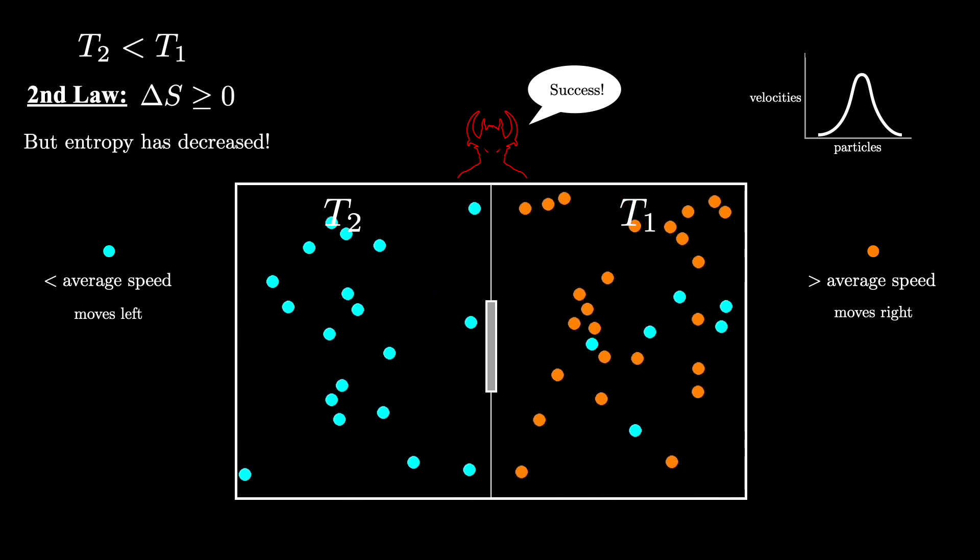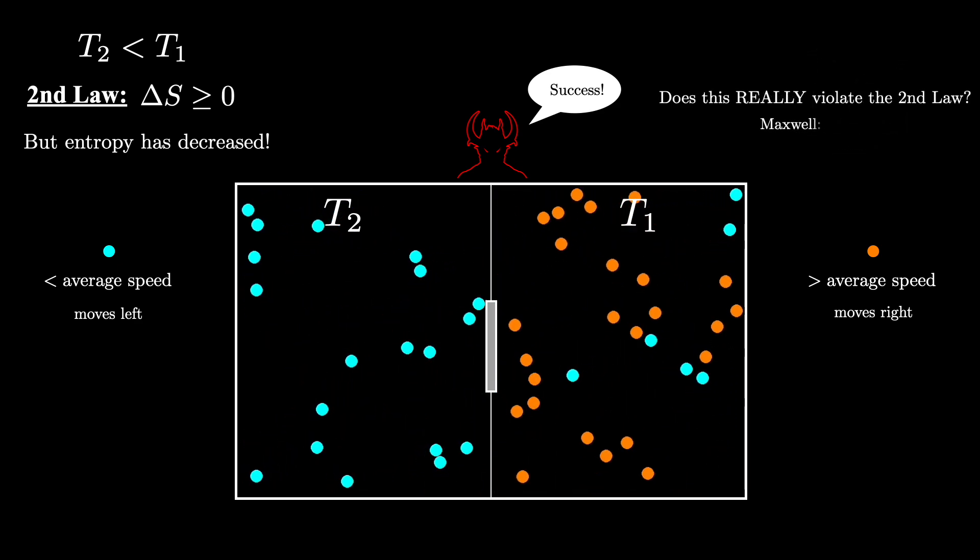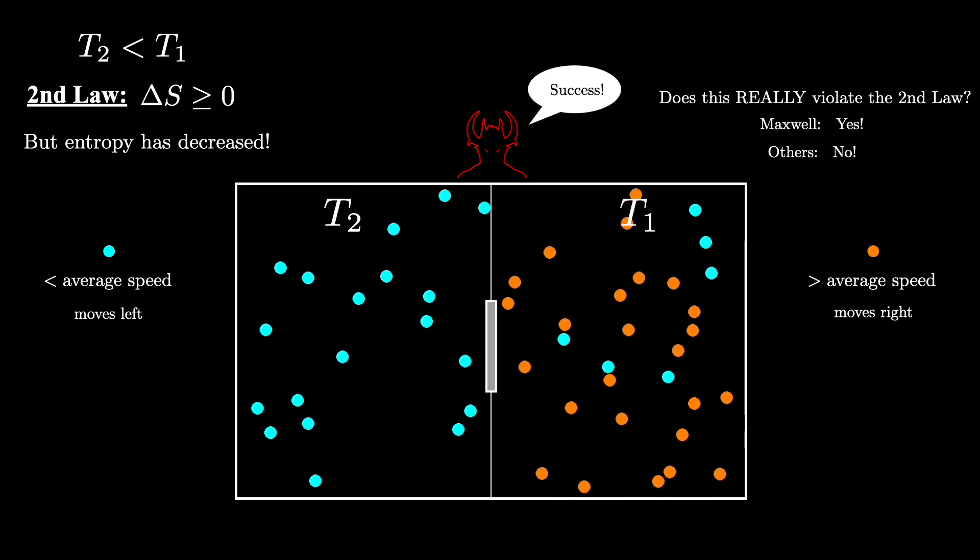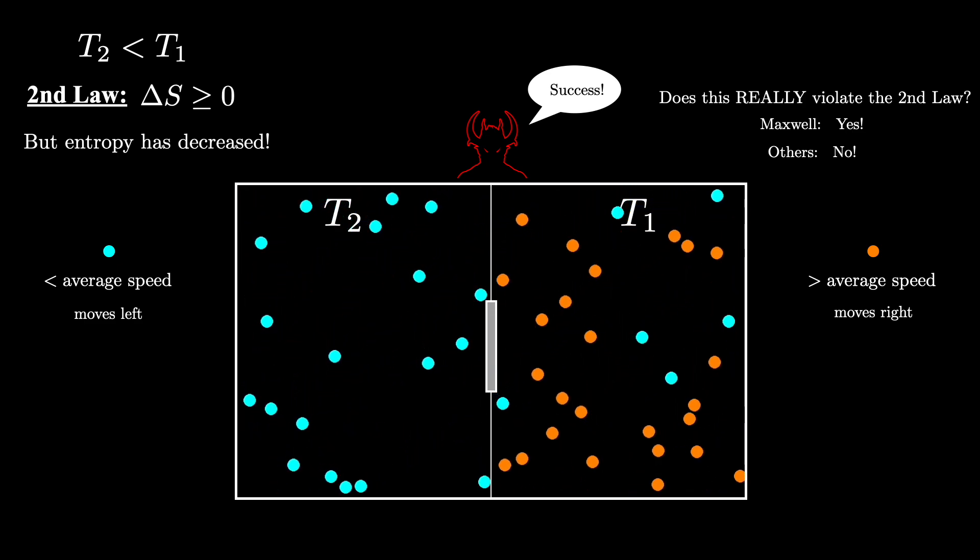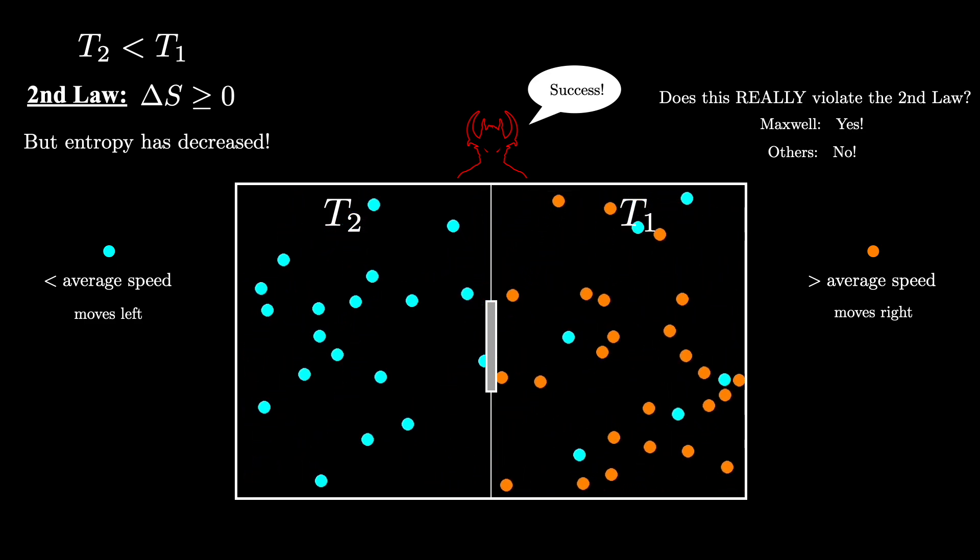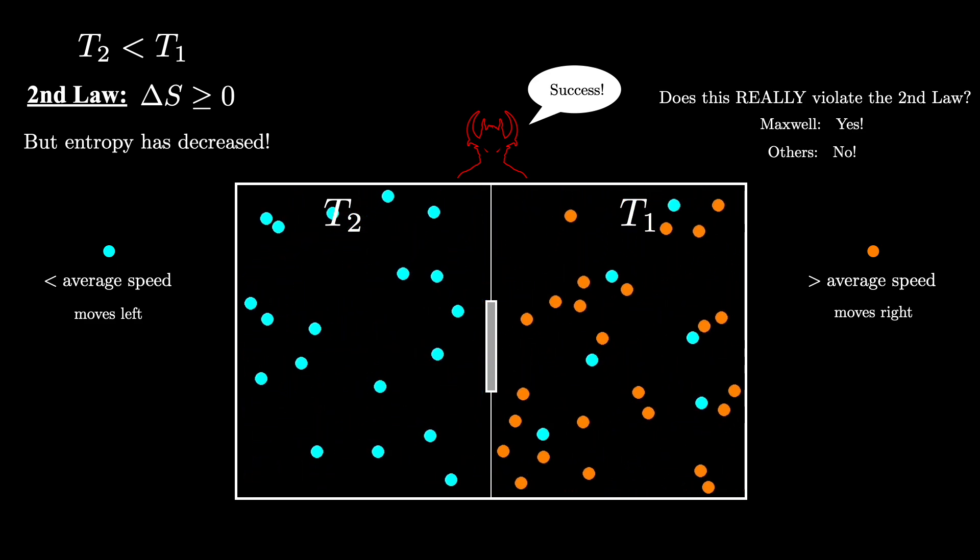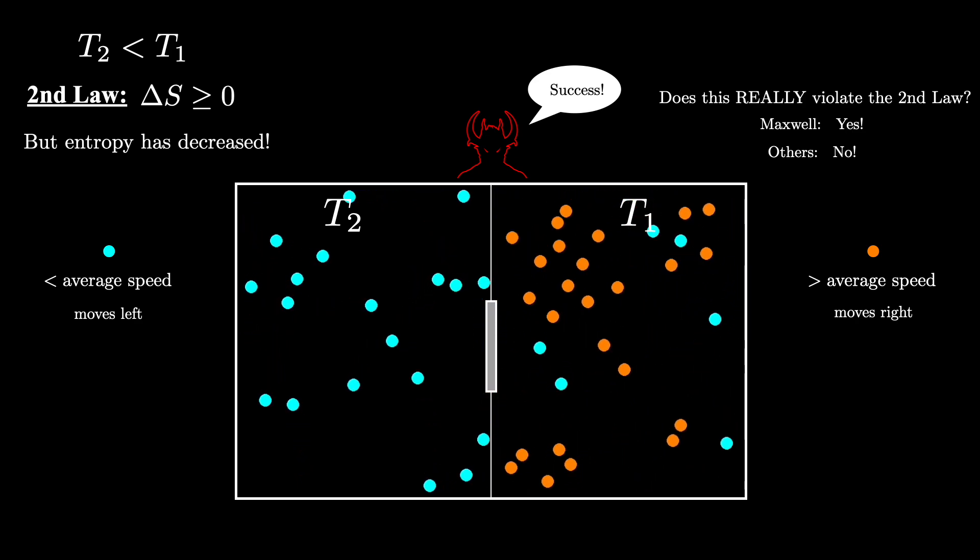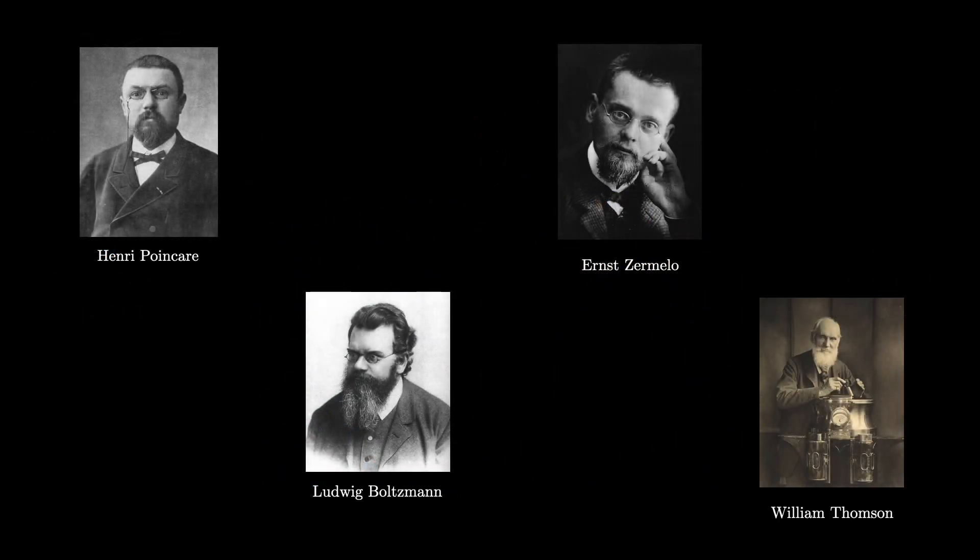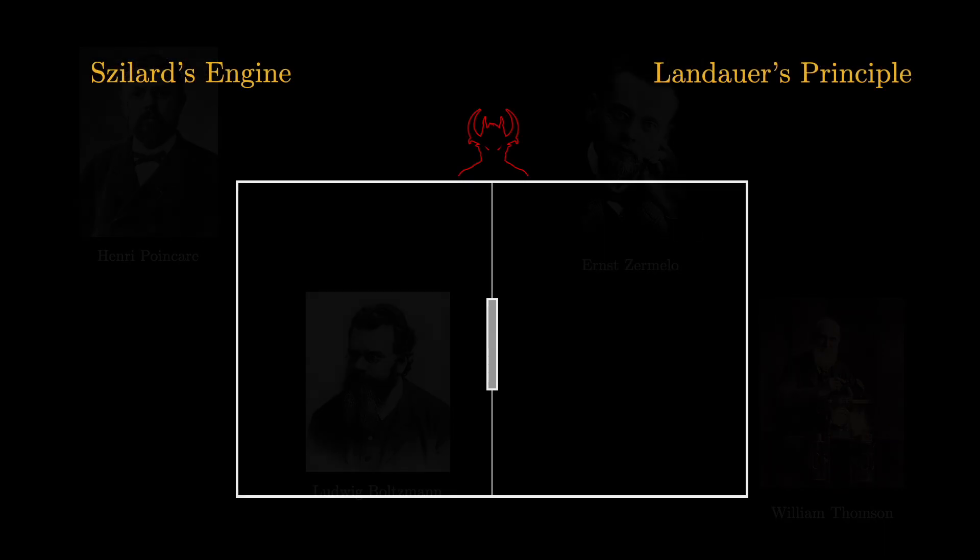Many other physicists were not satisfied with this, however, and believed that there must be something wrong with Maxwell's reasoning. This demon was simply an apparent paradox that needed to be resolved. And this became a common viewpoint in the physics community that subsequently led to an interesting history of prominent physicists each attempting their own solutions to the problem. Many of these attempts are quite interesting to study in their own right, but I would like to focus here on just two that have turned out to be most influential: Szilard's engine and Landauer's principle.